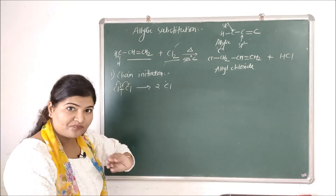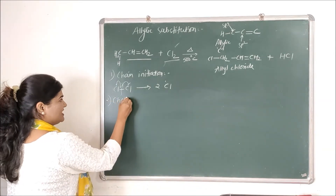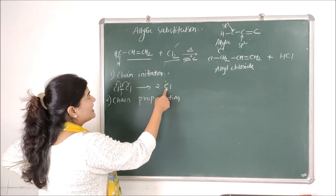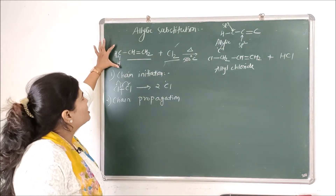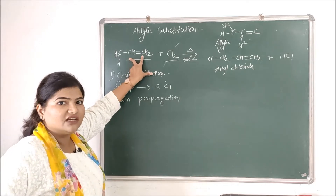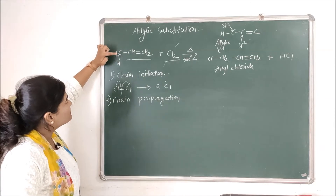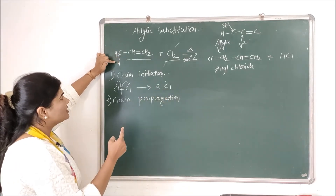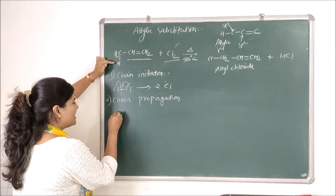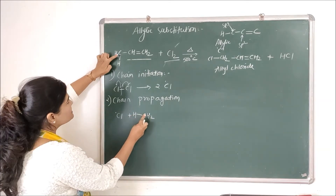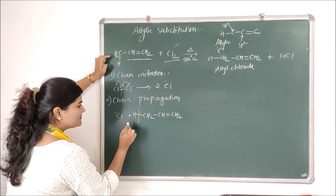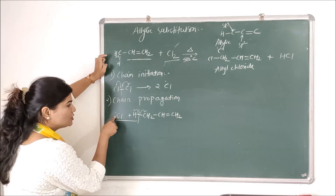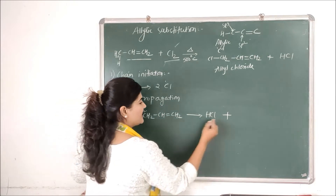These chlorine free radicals go into step two, chain propagation. The chlorine free radical which is generated goes and attacks our substrate molecule. The unsaturated system with its double bonds makes those carbon-carbon bonds difficult to break, but the allylic carbon-hydrogen bond is easier to break. So the chlorine free radical attacks this C–H bond, breaking it homolytically to form a hydrogen free radical and an allylic free radical. The hydrogen free radical bonds with the chlorine free radical to form HCl, and the allylic free radical is generated.